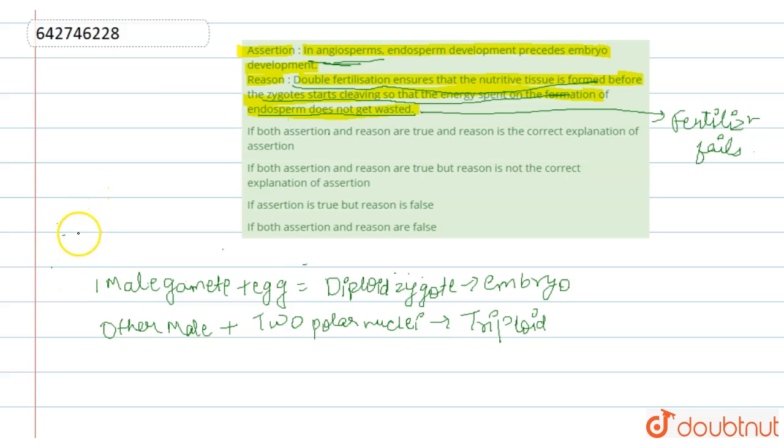So the correct option is: both the assertion and reason are correct, and the reason is the correct explanation for the assertion. So the first option is correct.